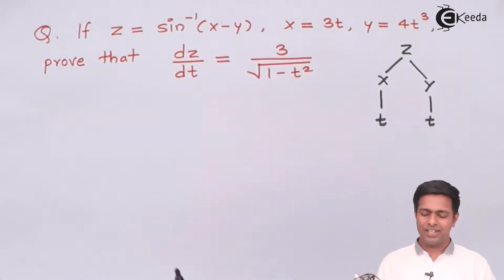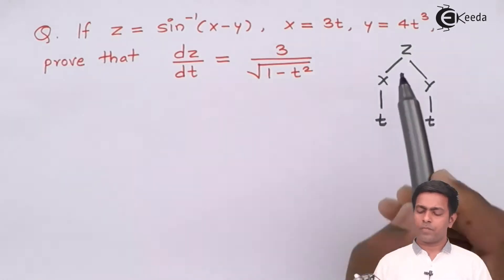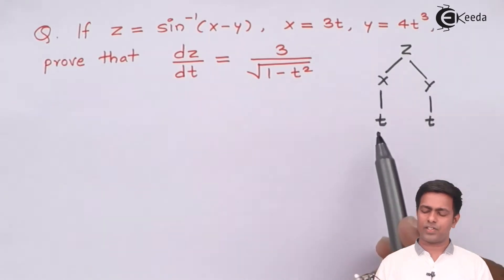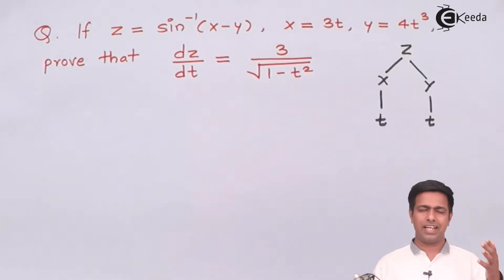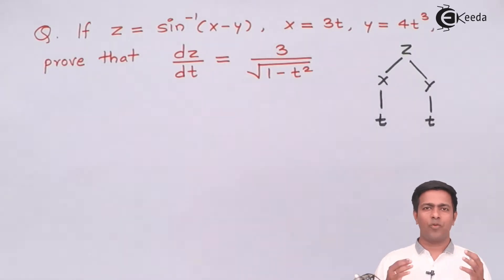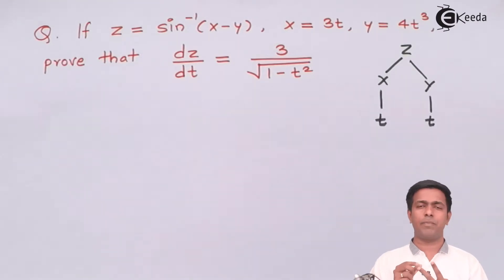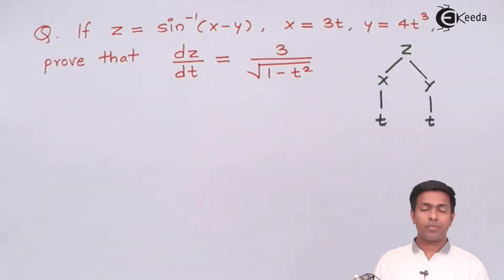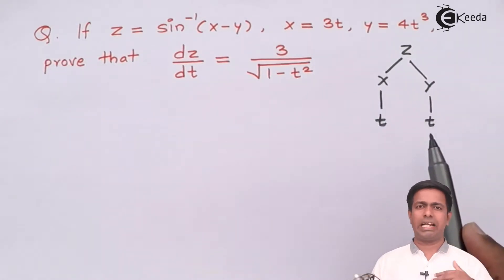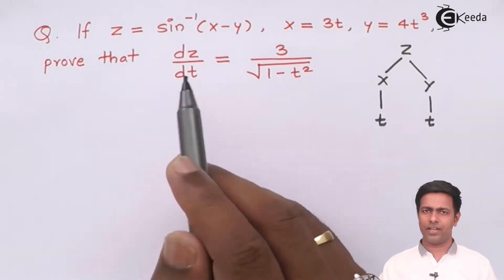The question asks us to prove that dz/dt. You might wonder why it is dz/dt — even though z is a function of x and y, since x and y are both functions of t, z ultimately becomes a function of t only. When we try to find the partial differentiation of z with respect to t, we actually get the complete differentiation, because partial differentiation requires at least two variables. Since z depends on only one variable here, we get the complete differentiation.